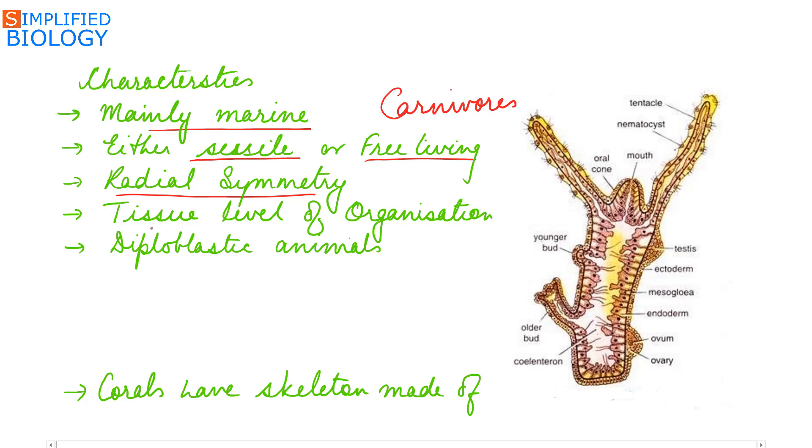Tissue level of organization is seen. In Porifera we saw cellular level of organization, but in this the cells together form tissues. These are diploblastic animals, means the body wall is two layered.